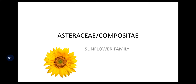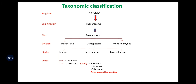Compositae or Asteraceae family is generally known as the sunflower family. The taxonomic classification goes like this: it belongs to kingdom Plantae, sub-kingdom Phanerogamae, class Dicotyledonae. Dicotyledonae is further divided into three divisions: Polypetalae, Gamopetalae, and Monochlamydeae. Gamopetalae is divided into series Inferae, Heteromerae, and Bicarpillatae. The series Inferae is subdivided into Rubyales and Asteraceae order.